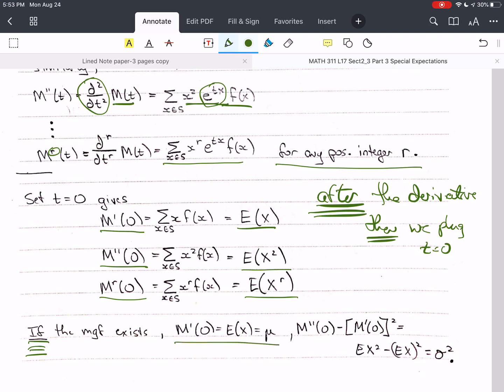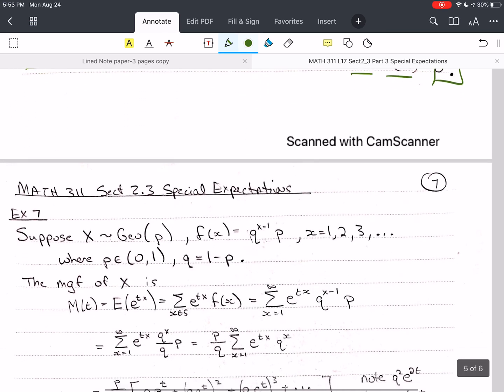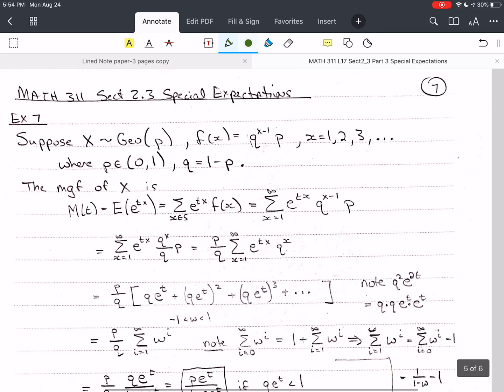and that's a big if, the mgf exists, the moment generating function exists, then the first moment, m prime of 0 is mu, m double prime of 0 minus the first moment squared gives us E X squared minus E of X raised to the second power, or E of X quantity squared, and that is the variance. So we can use the mgf to get our means and variance.